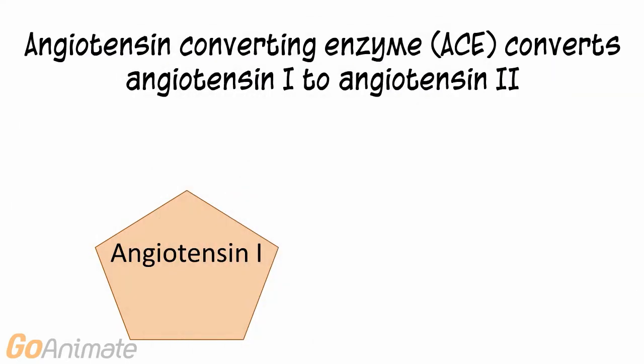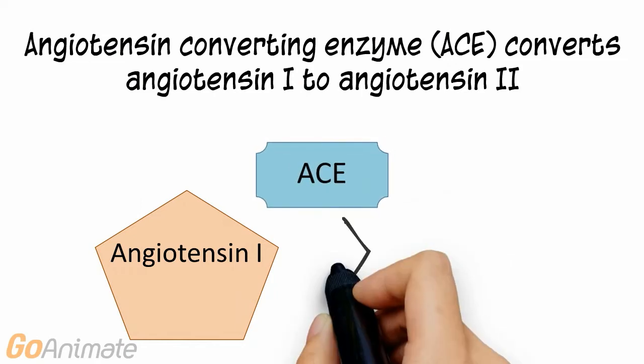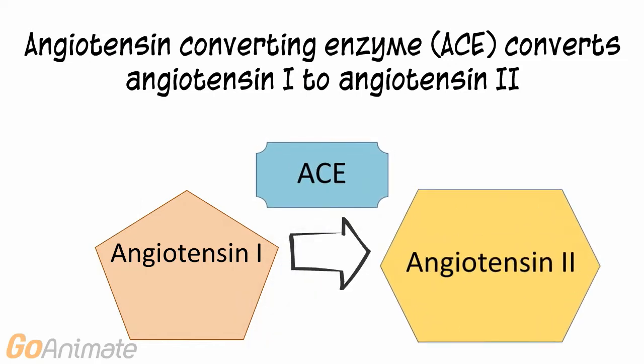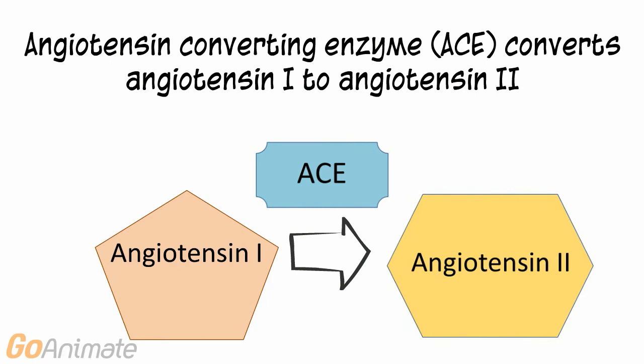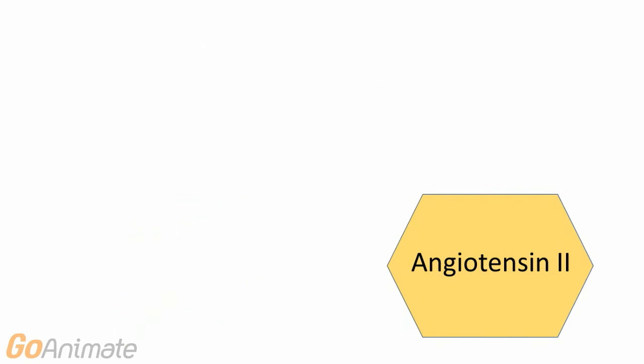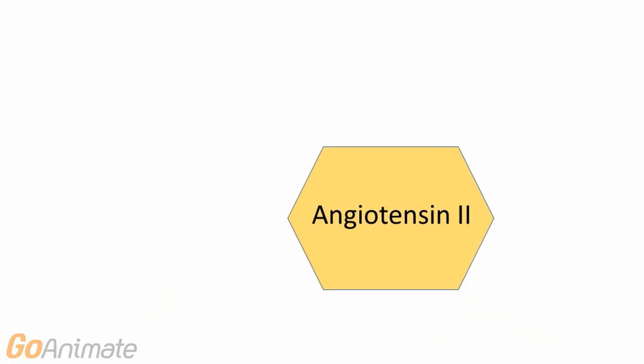The angiotensin converting enzyme, or ACE, promotes the conversion of angiotensin 1 to angiotensin 2. The angiotensin converting enzyme is present in blood vessels, especially in the lungs.